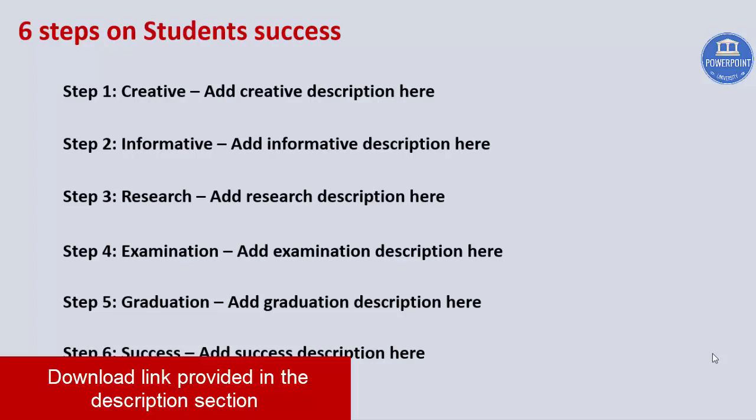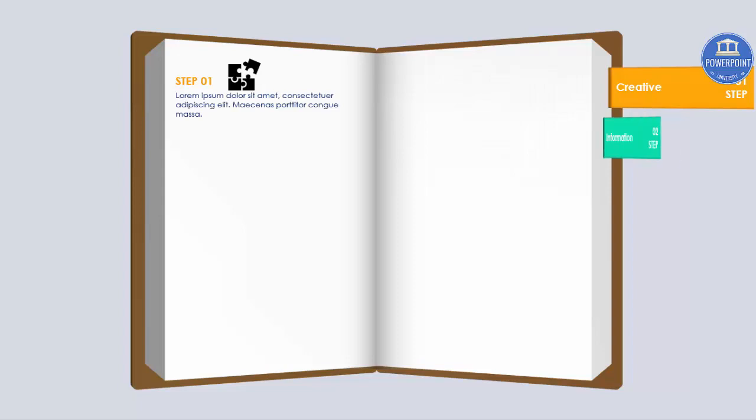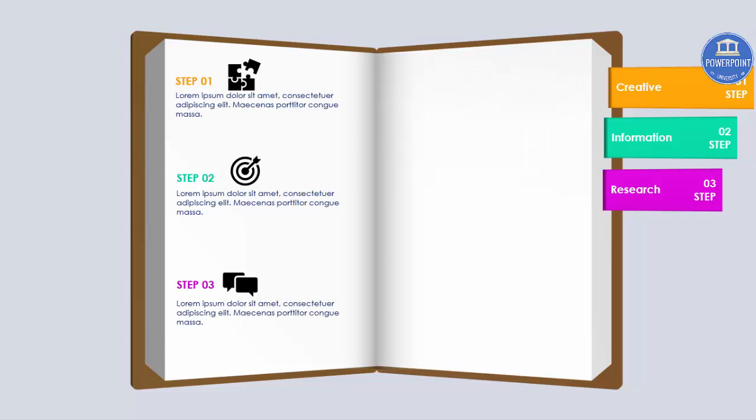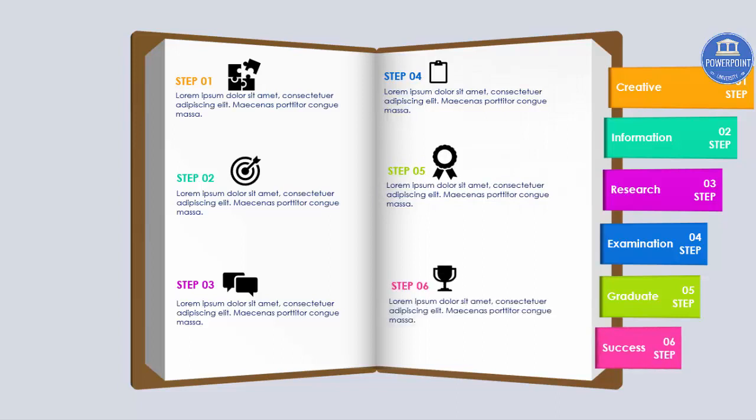This slide is all about students, so the moment I heard the word 'student', books came to mind. I thought, why not create something on a book? So my slide looks like this — I created a book. When I click, it shows the first step: Creative; second: Information; third: Research; fourth: Examination; fifth: Graduate; sixth: Success.